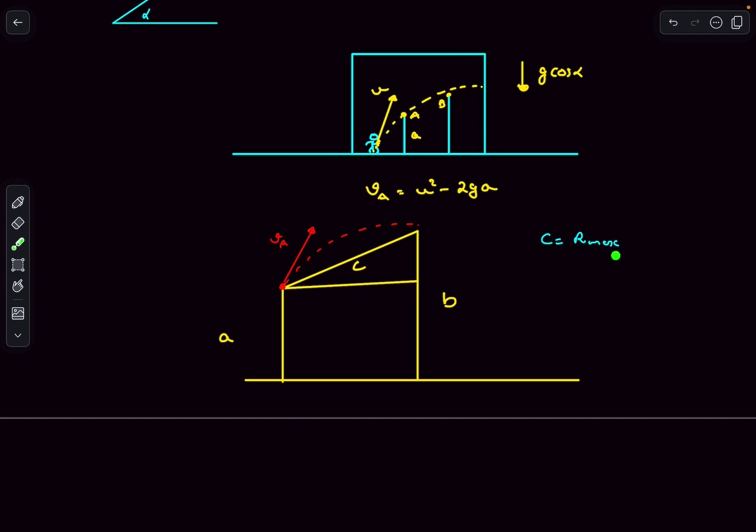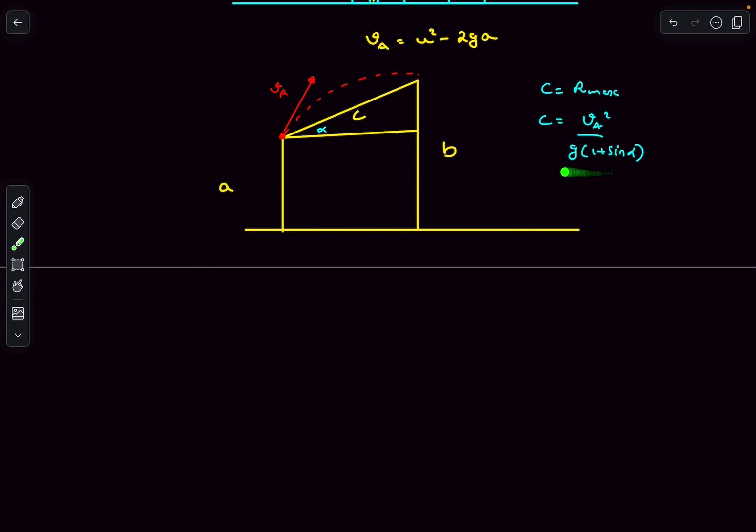For that, c has to be equal to the maximum range for this projectile motion. And the maximum range formula for an uphill projectile is actually the speed squared divided by g times (1 plus sine alpha), where alpha is the angle of the incline. This is a standard result.